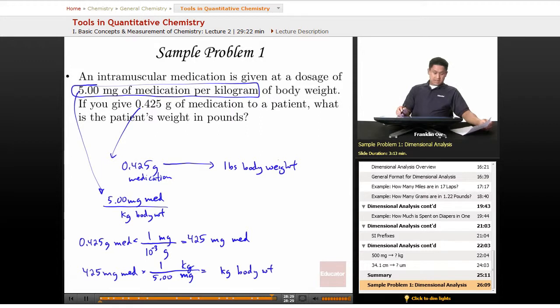Finally, we can then take our kilogram of body weight and we can go to pounds of body weight. And we do that from the conversion factor where 1 kg is equal to approximately 2.20 pounds. So we're going to take kilograms of weight, multiply it by something over something, and that's going to give us our answer in pounds.